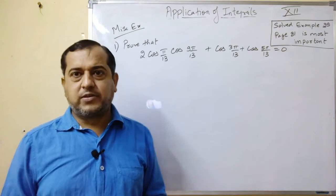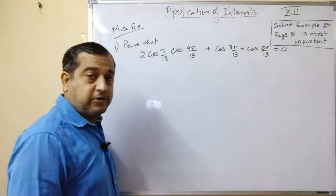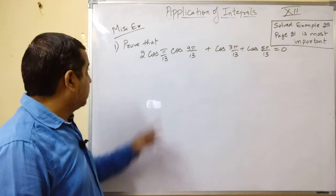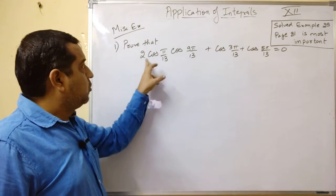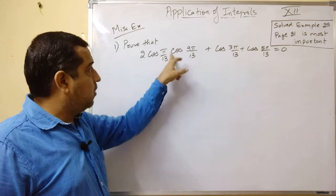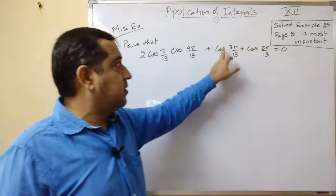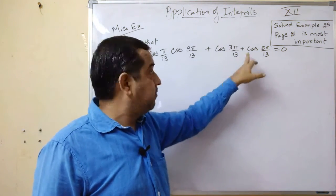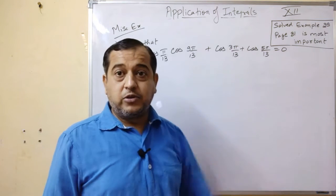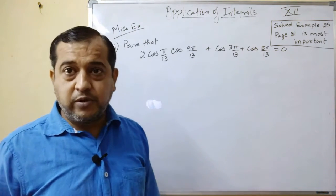Proceeding further, we come to the miscellaneous exercise Chapter 3, trigonometric functions. Now in this case, see the first question. Prove that 2 cos(π/13) cos(9π/13) plus cos(3π/13) plus cos(5π/13) equals 0. Here you are having the product. You have to prove this.